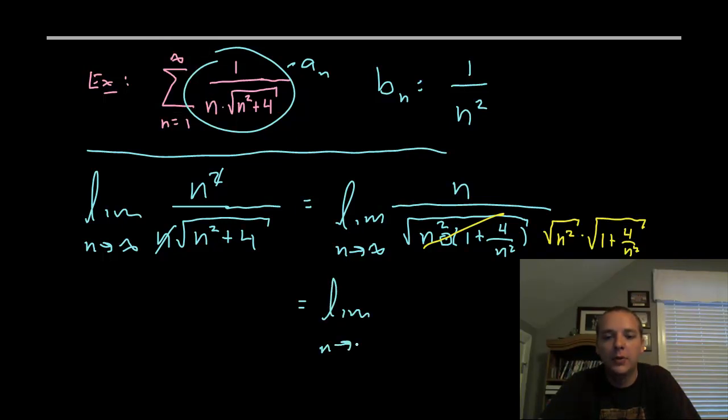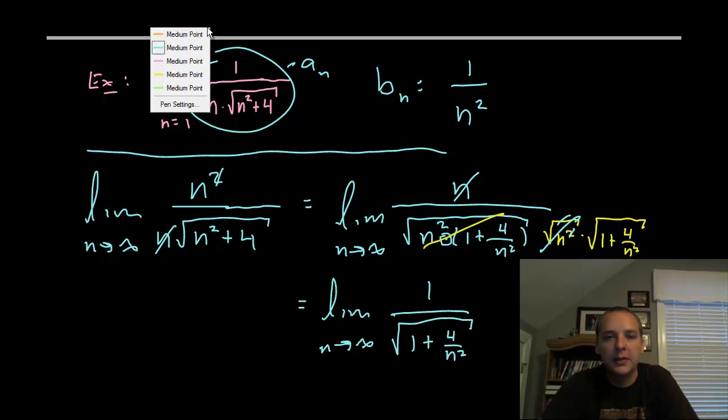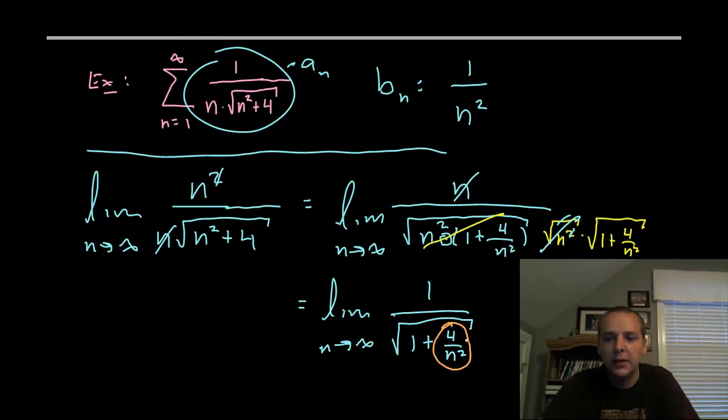So the limit, n approaches infinity, since n is already positive, the square root of n squared, those will negate each other and you get n over n, which those will cancel. And so we'll be taking the limit of one over the square root of one plus four over n squared. Now as n approaches infinity, this expression here is going to go to zero, right? Because it's going to have a large denominator with a constant in the numerator. So all in all, this goes to one.